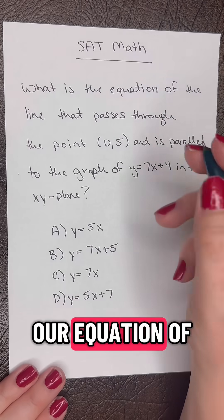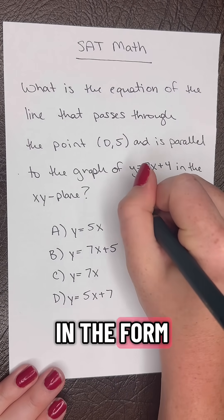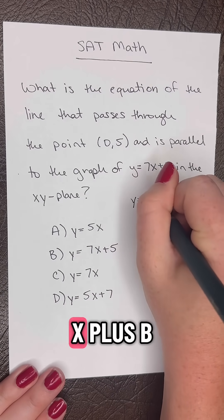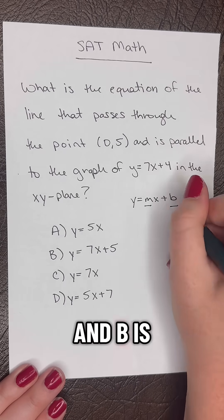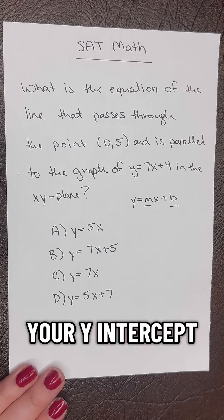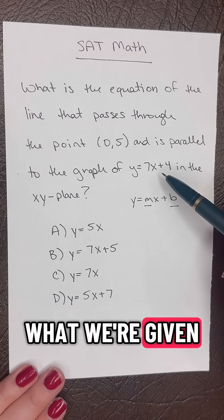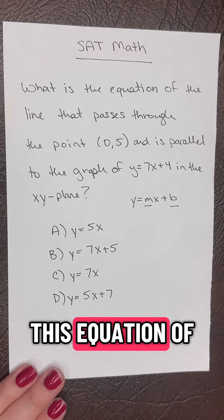We know that our equation of the line is going to be in the form of y = mx + b, where m is your slope and b is going to be your y-intercept. We need to look at what we're given and then create this equation of the line.